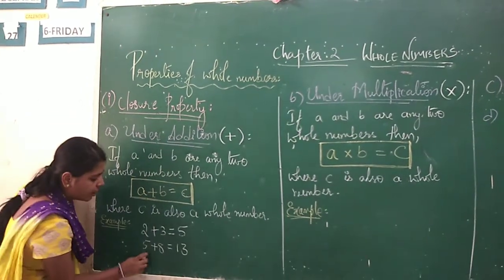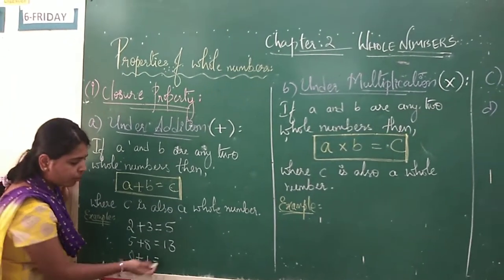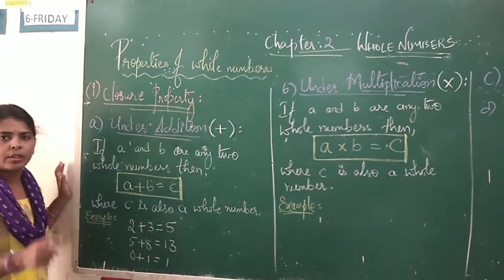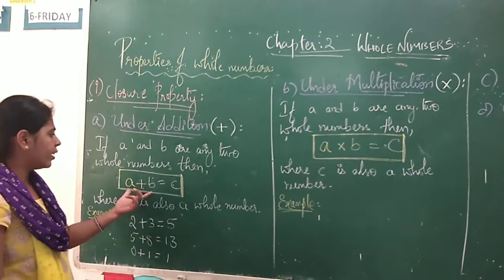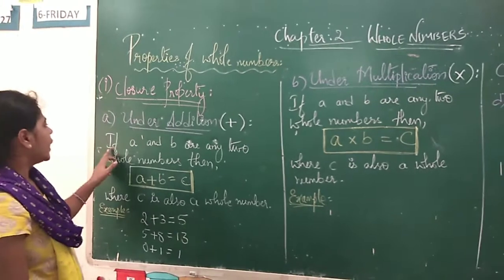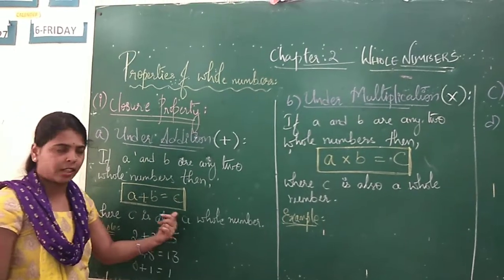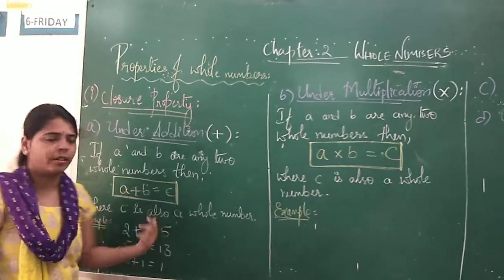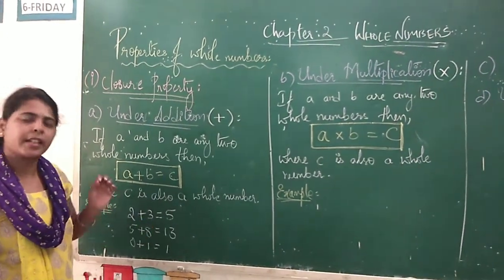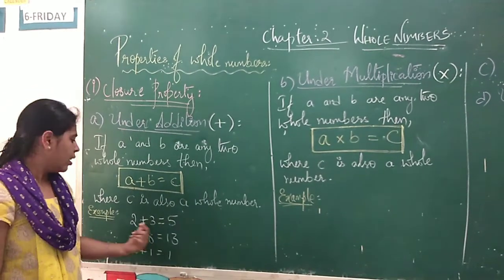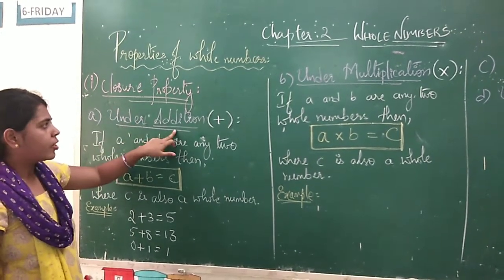Any whole numbers you can take. For example, 0 plus 1 is also a whole number, because 0 is also a whole number and 1 is also a whole number, and 0 plus 1 gives you 1. So any two whole numbers that you add, you get the answer as a whole number itself. The statement is: if A and B are any two whole numbers, then A plus B will become C, where C is also a whole number. If we add any two whole numbers in any order, we will get the same result. So under closure property, addition is satisfied.